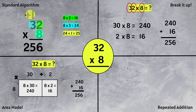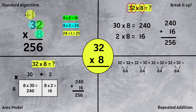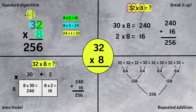Let's use repeated addition. We need to add 32 eight times. We have 8 thirty-twos. We know that 32 plus 32 is 64, so we get 64 plus 64 plus 64 plus 64. Combining 64 plus 64 gives 128, and another 64 plus 64 gives 128. Now adding 128 plus 128 gives 256. The product of 32 times 8 is 256.